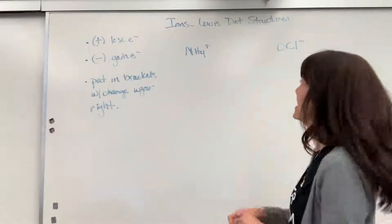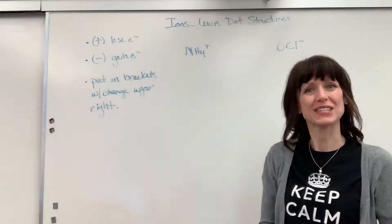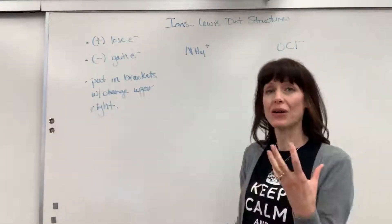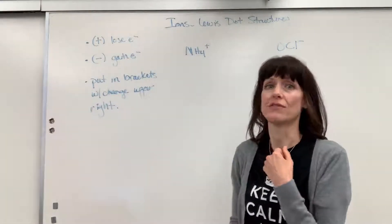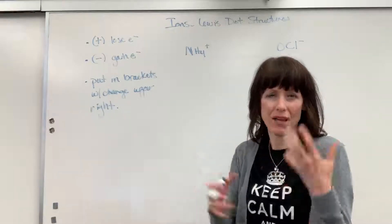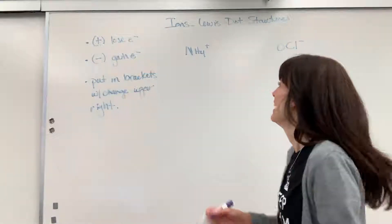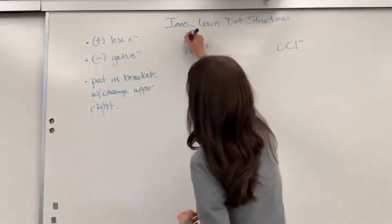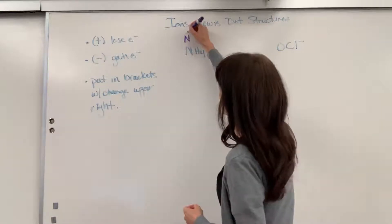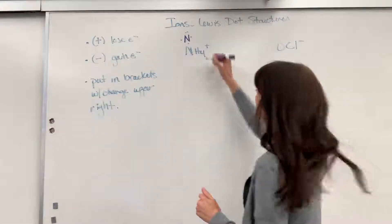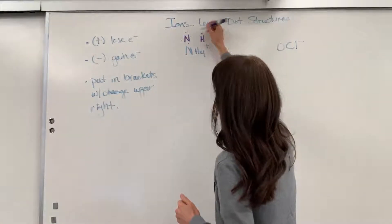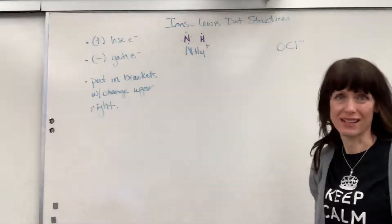Okay, so let's go ahead and do ammonium, NH4+. So I see that plus sign. I know I can remove an electron from anything I want to make my octet work. So let's go ahead and do the electron dot. Nitrogen has five valence electrons. I've got four hydrogens, and it has one valence electron.